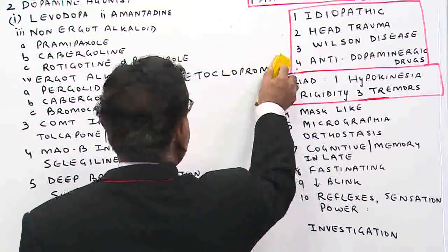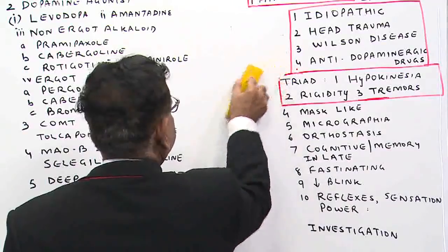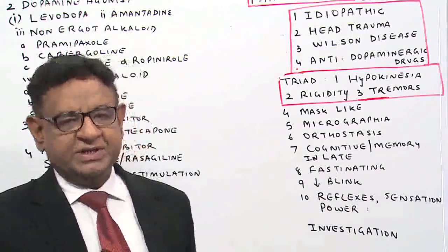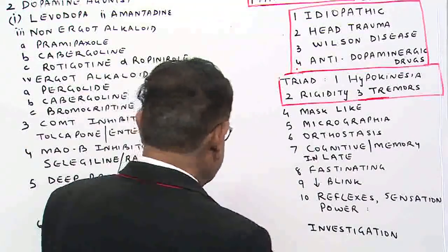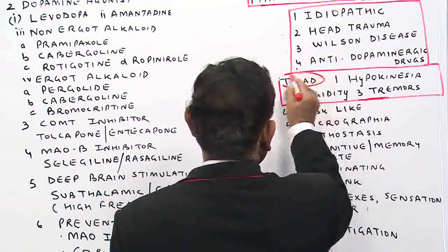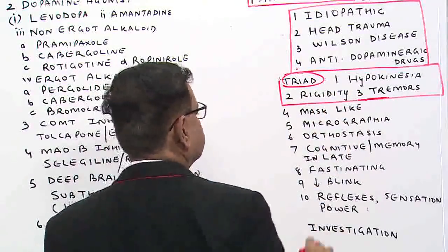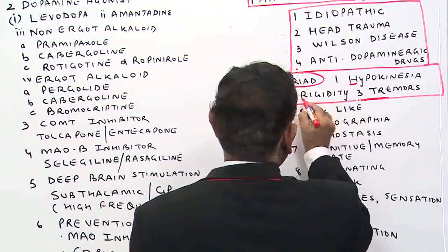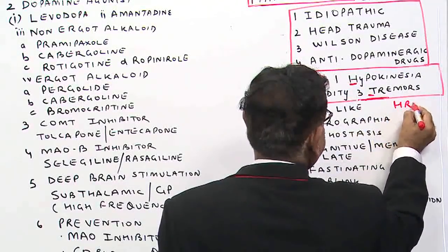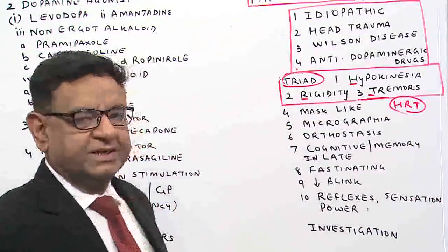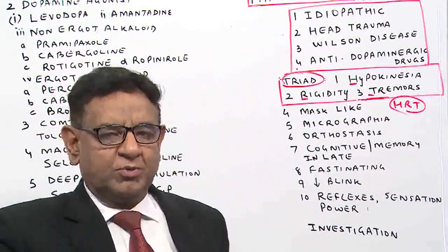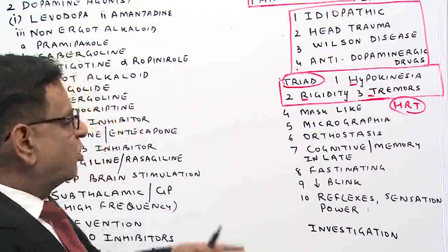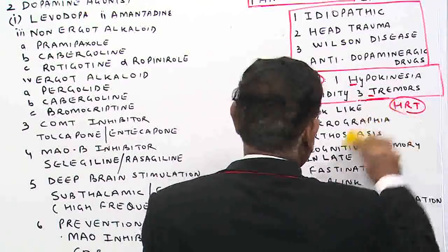I hope now you have understood what are the causes of Parkinson's. What are the classical features we have in this case? The triad of symptoms is hypokinesia, rigidity, and tremor. The mnemonic is HRT — the same mnemonic used for hormone replacement therapy. Let us talk more about these three things.